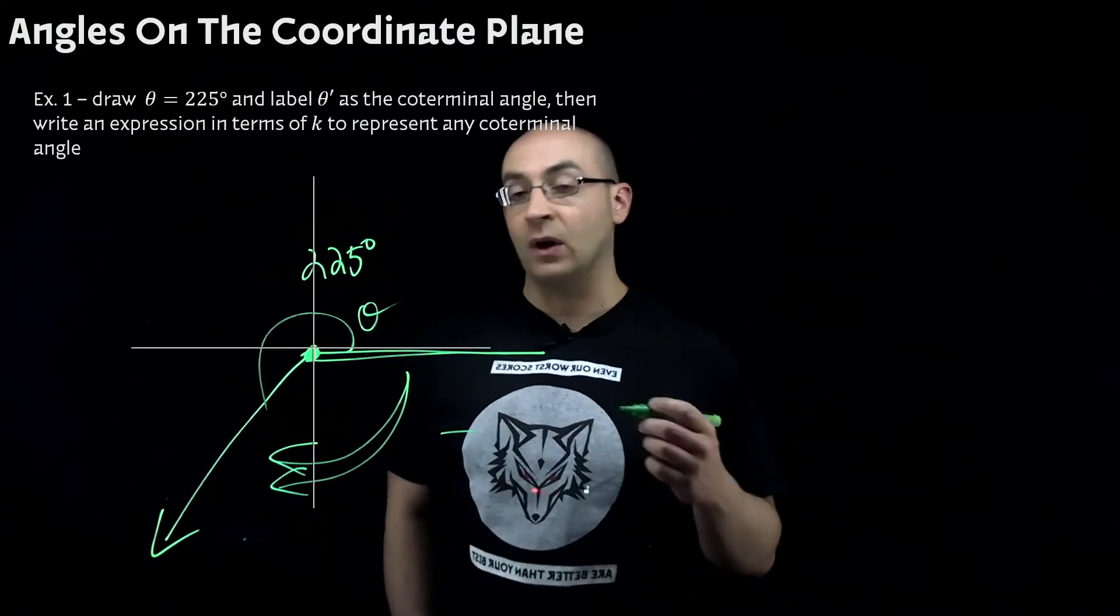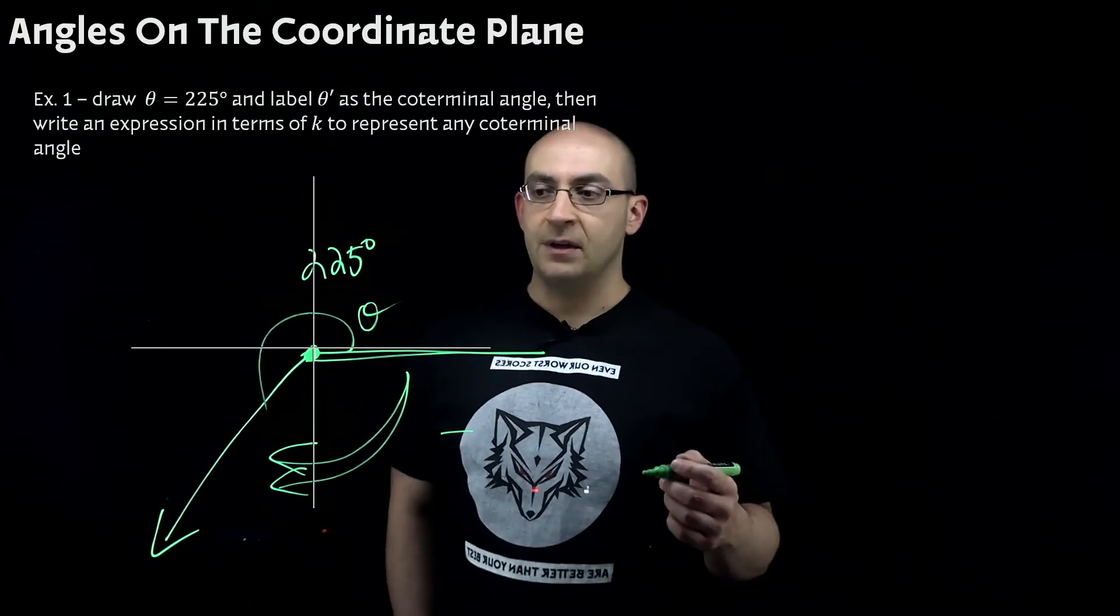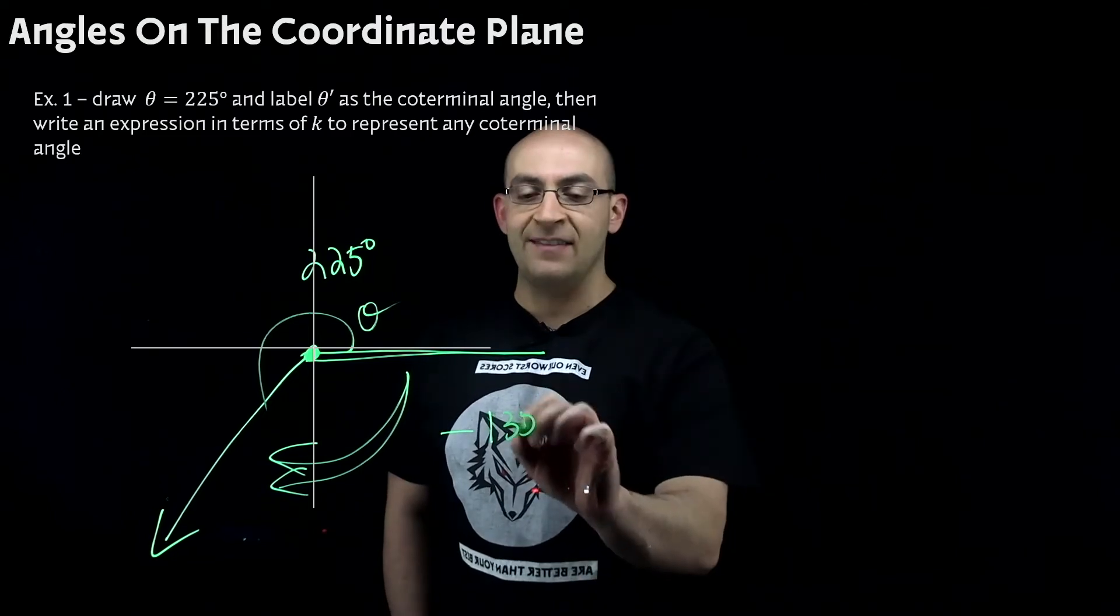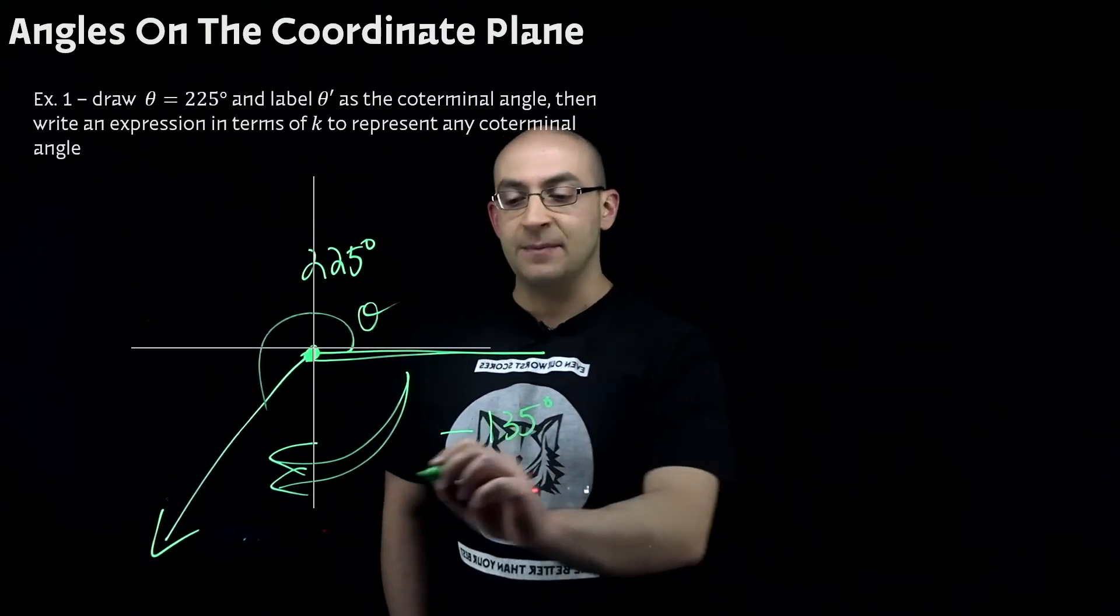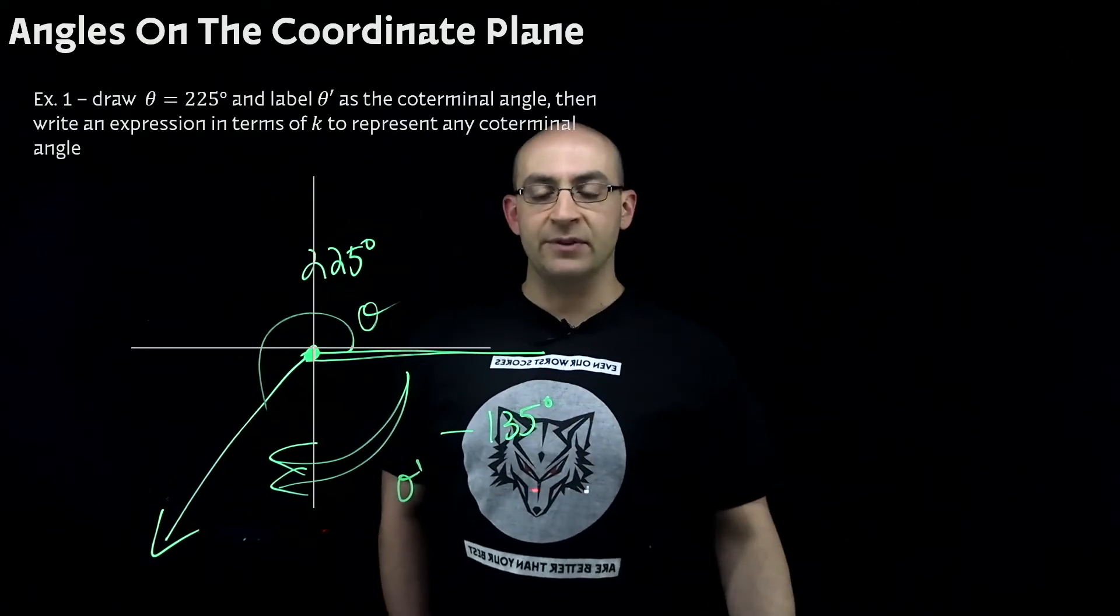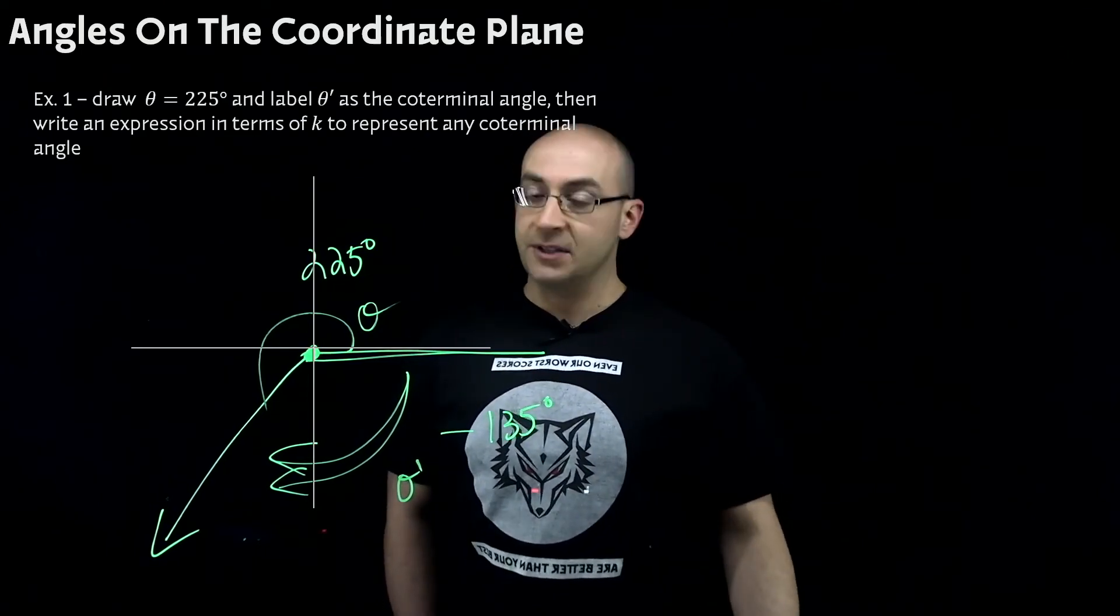This has to be negative now because again, I'm adding or subtracting one revolution from 360. So kind of like our other problem, 360 minus 225 is going to give us 135, but it's going to be negative. And that's going to be our theta prime. So in relationship to 225 degrees, our coterminal angle is going to be negative 135.